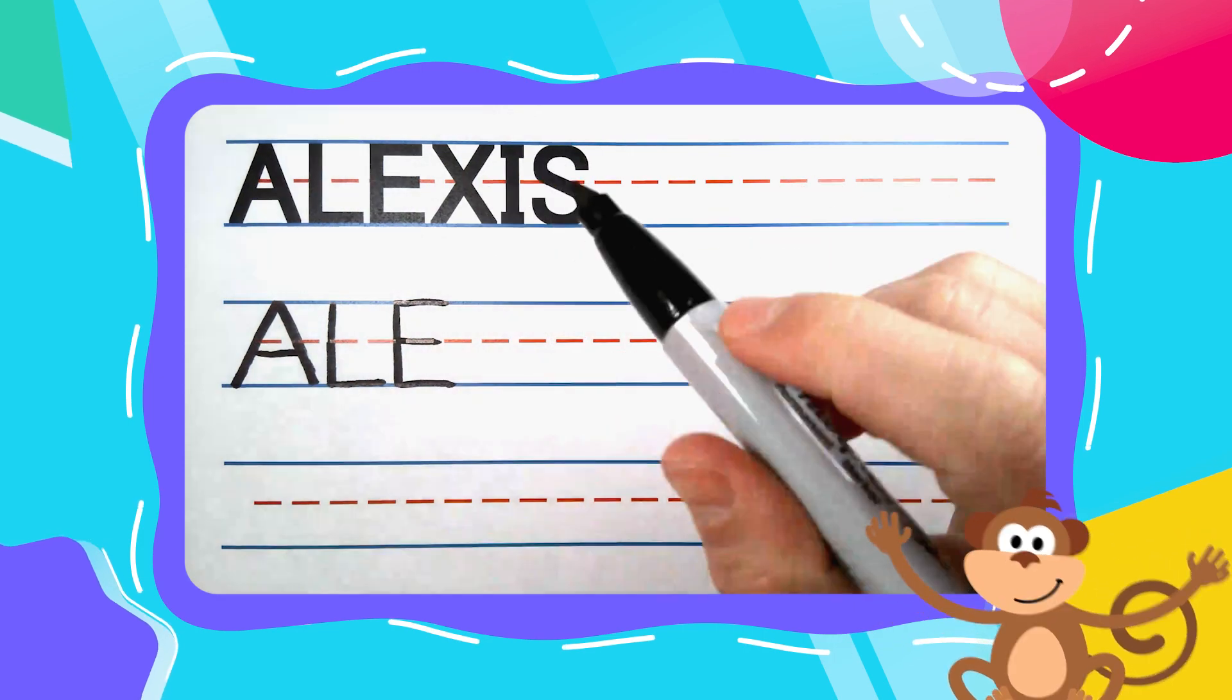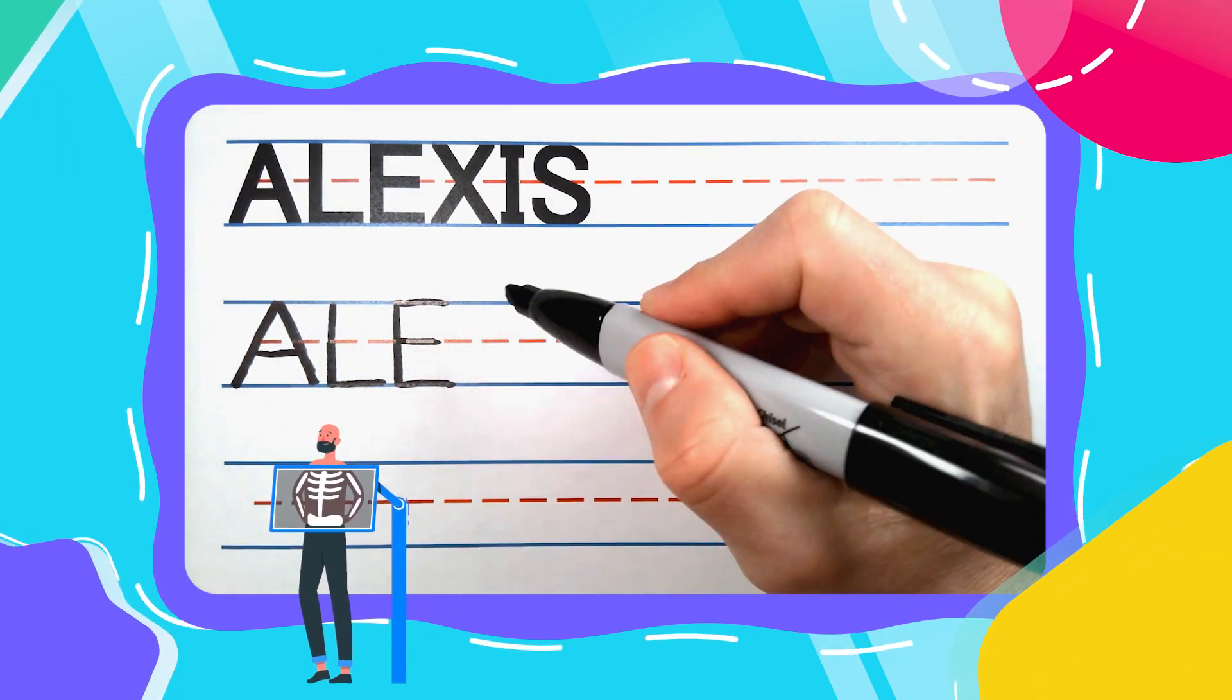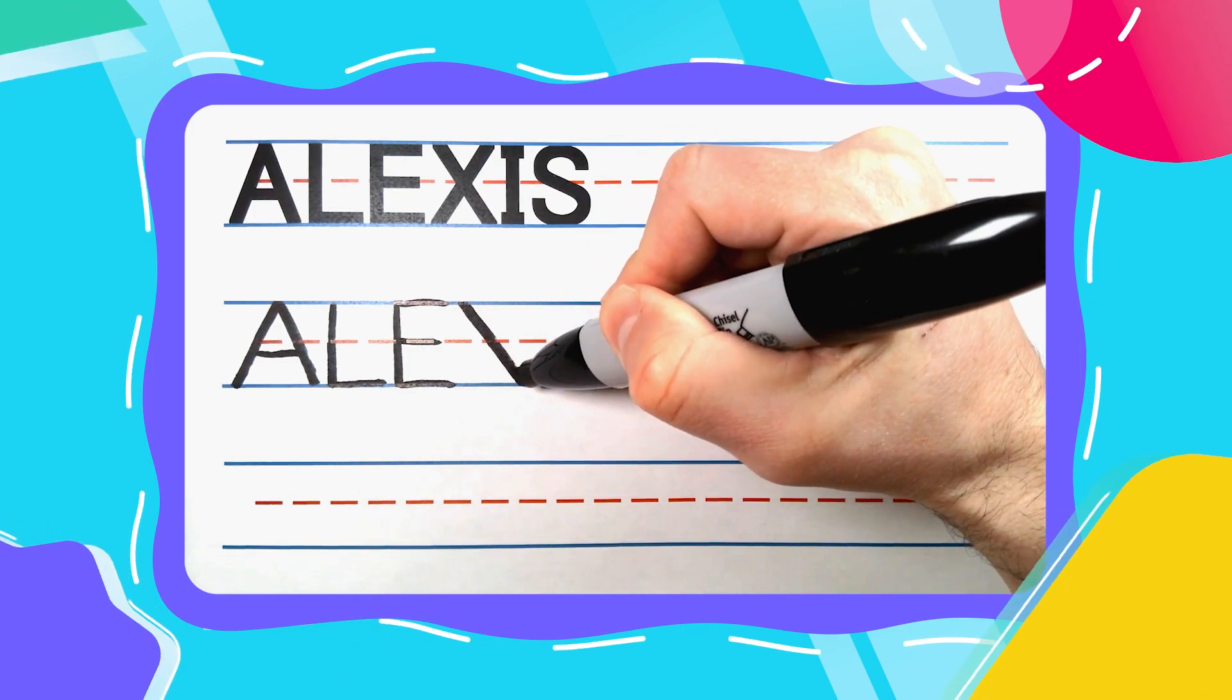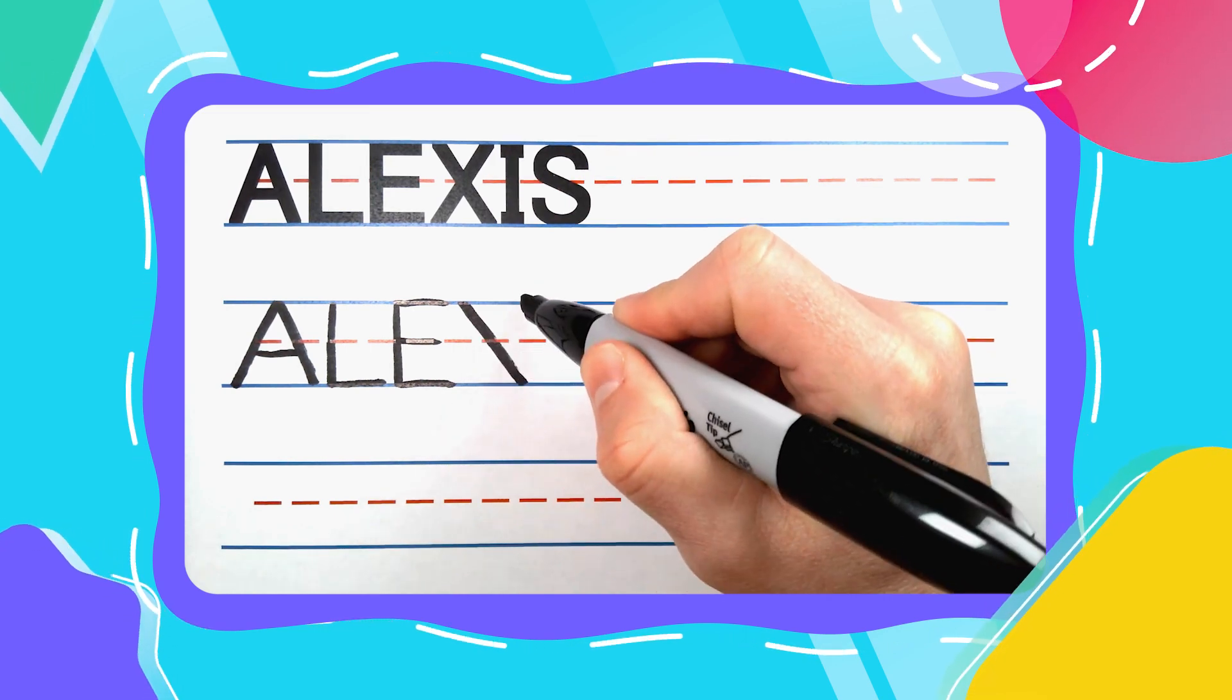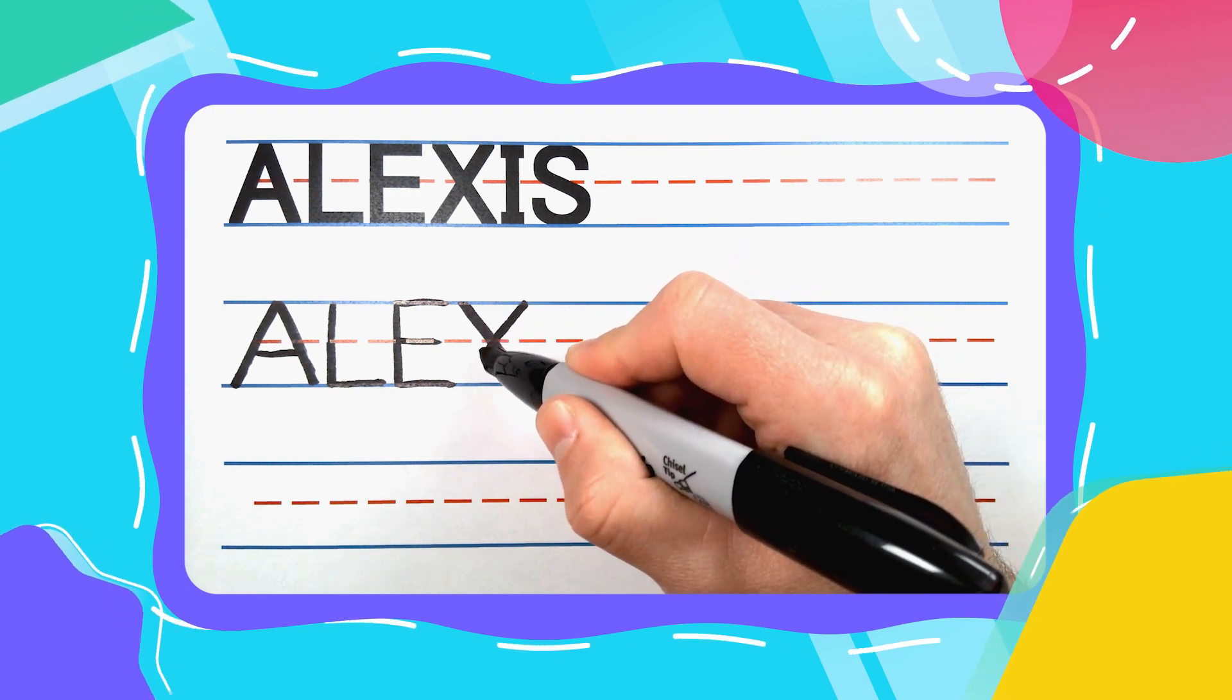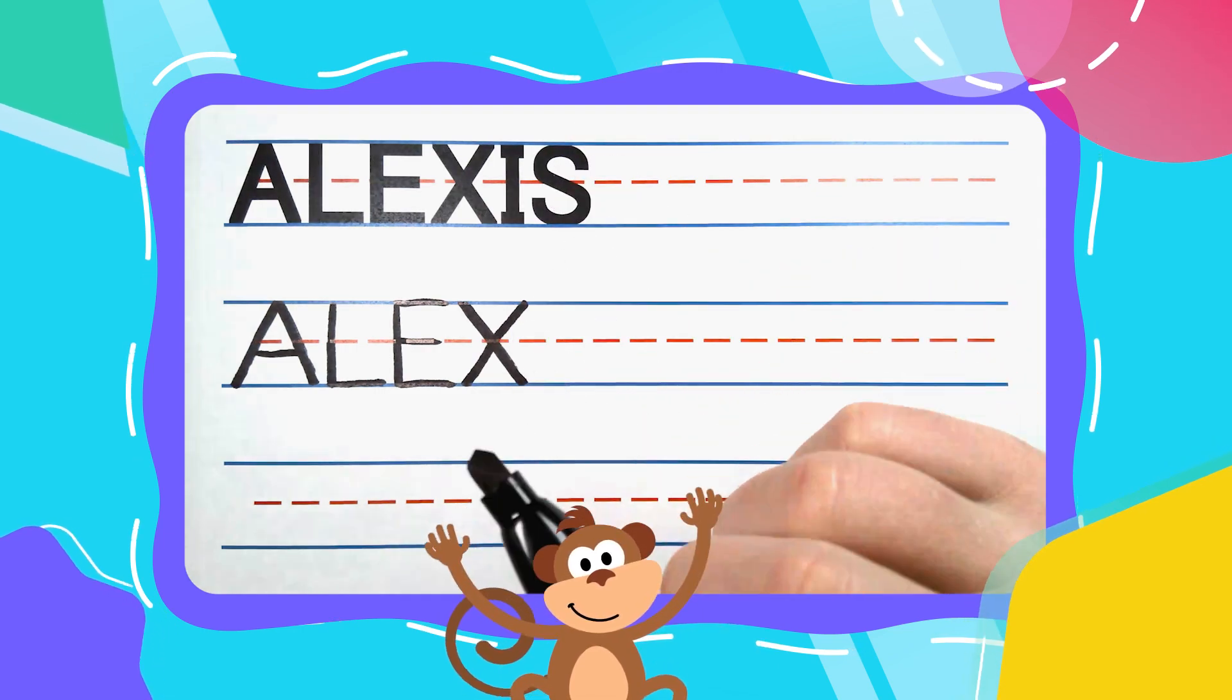Alright friends, the next letter is an X-Ray X. I like to start my X at the top and diagonal down to the bottom. Then I'll come back to the top and try and cross right in the middle. Straight up above this line, and diagonal down through the middle. Stop once you get to the bottom to complete your X.